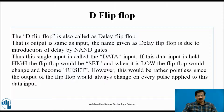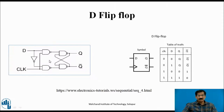The D flip-flop, called a delay flip-flop, is obtained by complementing the J input and giving it as the K input of the basic JK flip-flop. In this case, we have only two input combinations: 0,1 and 1,0. If D equals 0, output will be 0. If D equals 1, output will be 1, as shown in the truth table.